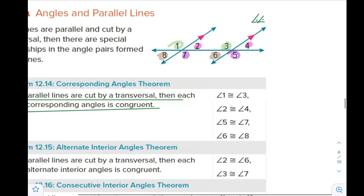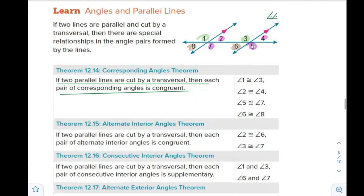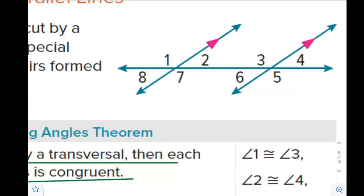Remember, this is only if the lines are parallel. If not parallel, we cannot determine the measure and can use any other approach that fits. The same applies to the alternate interior angle. The alternate interior angles in our case are angles 2 and 6, as you see — they form like the letter Z. So 2 and 6 are alternate interior angles.